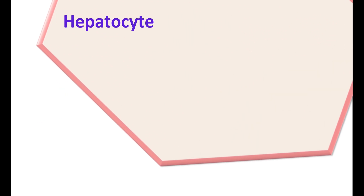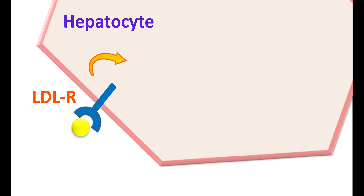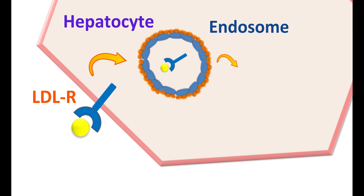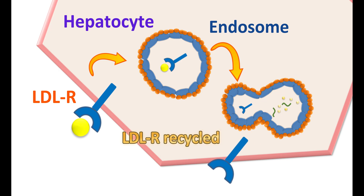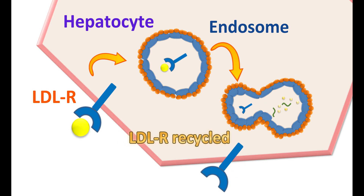Now let us see how it works. On the hepatocytes, LDL receptors are expressed, which are responsible for uptake of LDL from the blood circulation. When LDL binds to these receptors, they are internalized and taken up by endosomes within the liver. These endosomes produce degradation of cholesterol. However, the LDL receptor is recycled and is again responsible for uptake of LDL. In this way, cholesterol is taken into the hepatocytes where it is degraded, and LDL receptors are recycled to the surface of the hepatocytes.